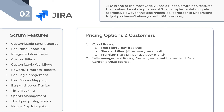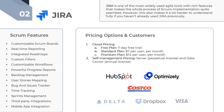Thousands of modern software teams already use Jira software and other solutions from the Atlassian suite. Here's a list of 10 of its customers: Airbnb, Spotify, Cisco, Domino's, eBay, Rosetta Stone, and many others.